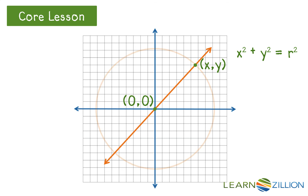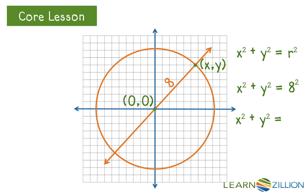For example, the radius of this circle is 8. So the equation of the circle is x squared plus y squared equals 8 squared, or simplified, x squared plus y squared equals 64. With this equation, we can find other points on the circle or determine if a point is on the circle or not.